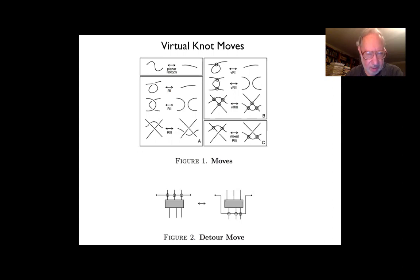It's a crossing that is neither over nor under, and it actually indicates a connection between two points and is not meant to be a crossing in the sense of embeddings in three-space. In fact, it can be thought of as a detour along a handle on a surface, or simply as a diagrammatic detour, drawing something which cannot otherwise be drawn in the plane.